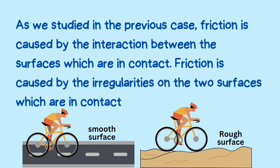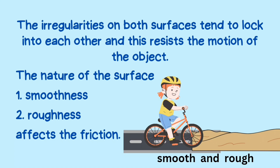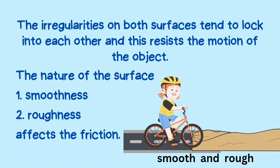Friction is caused by the interaction between the surfaces which are in contact. The irregularities on both surfaces tend to lock into each other, and this resists the motion of the object. The nature of the surface — smoothness or roughness — affects the friction.